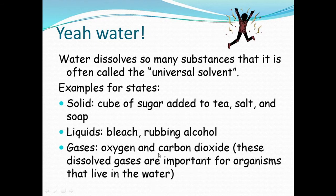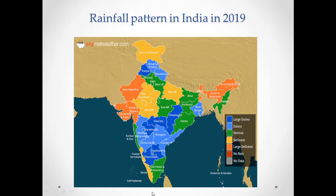Even most parts of our body need water. Here you can see the rainfall pattern in India in 2019. In this map, dark blue represents large excess rainfall, light blue represents excess, green represents normal, yellow represents deficient, orange represents large deficient, and dark orange represents no rainfall.